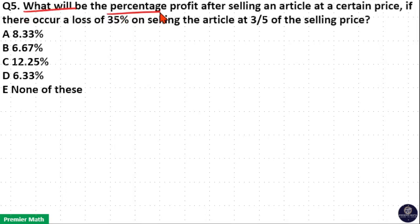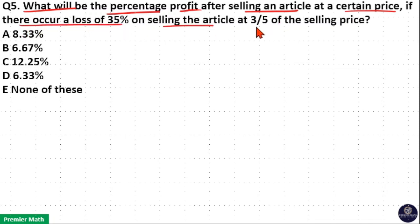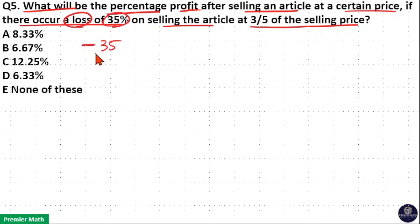What will be the percentage profit after selling an article at a certain price, if there occurs a loss of 35% on selling the article at 3/5 of the selling price? Here loss is equal to 35%, which means negative 35%, which is 35/100. Now 5 goes 7 times in 35, and 5 goes 20 times in 100, giving us negative 7/20.